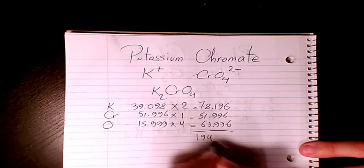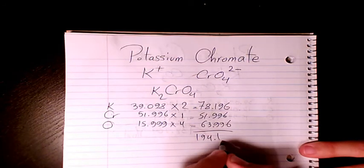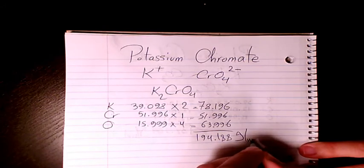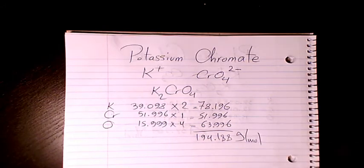That makes it 194.188 grams per mole. That's the molar mass or molecular weight of potassium chromate.